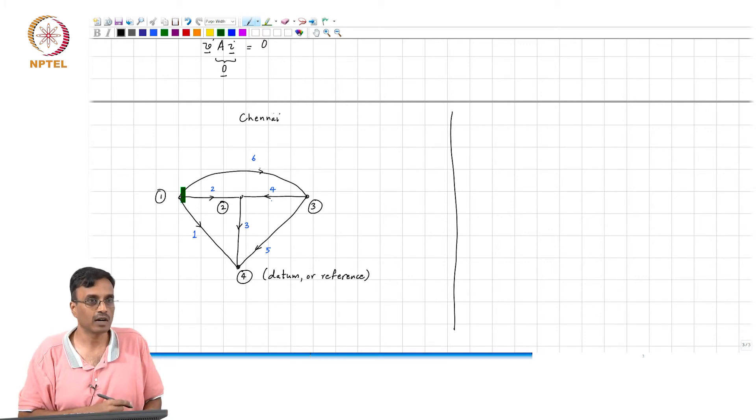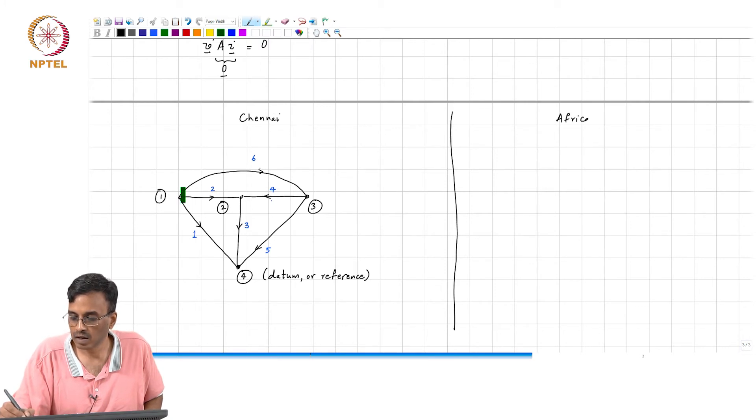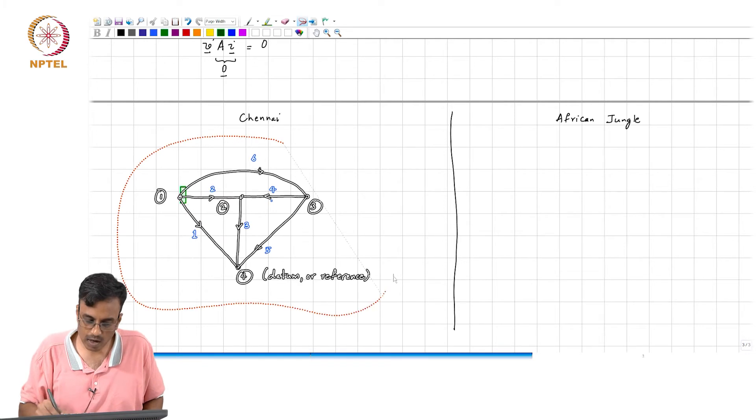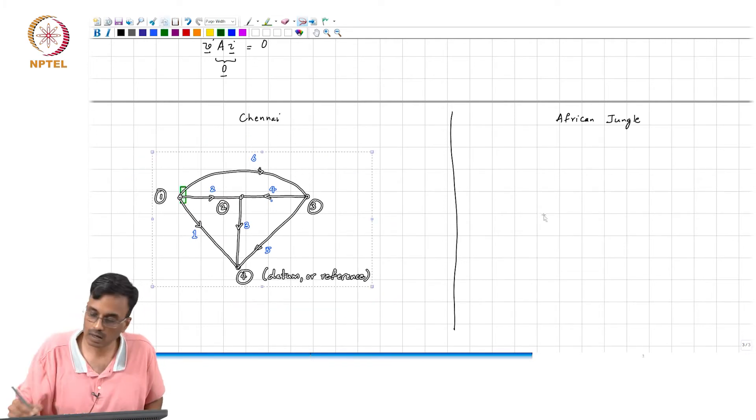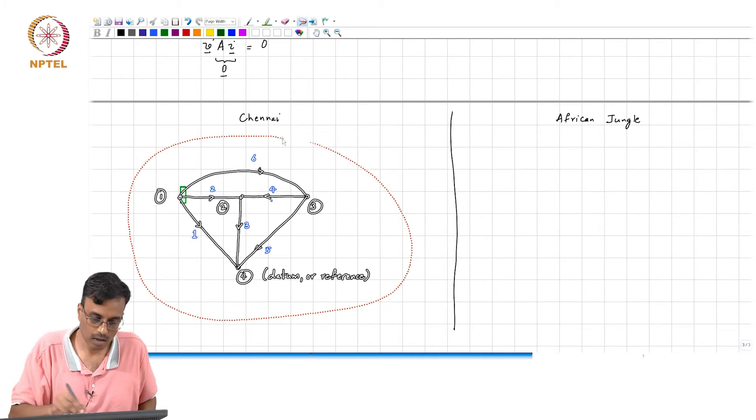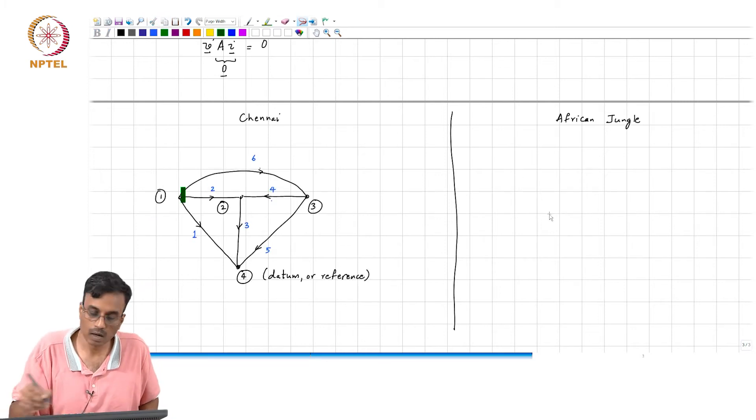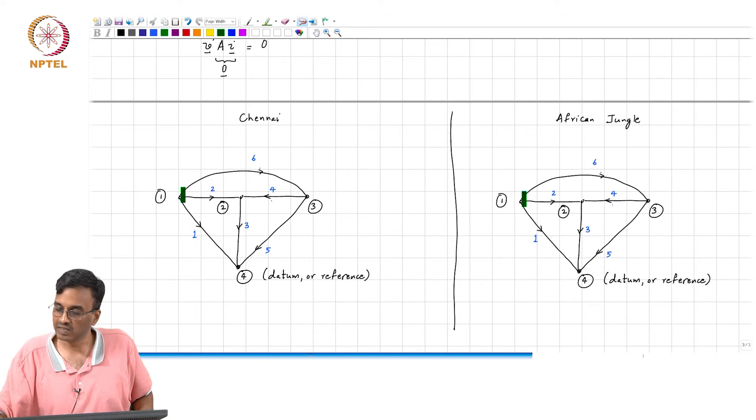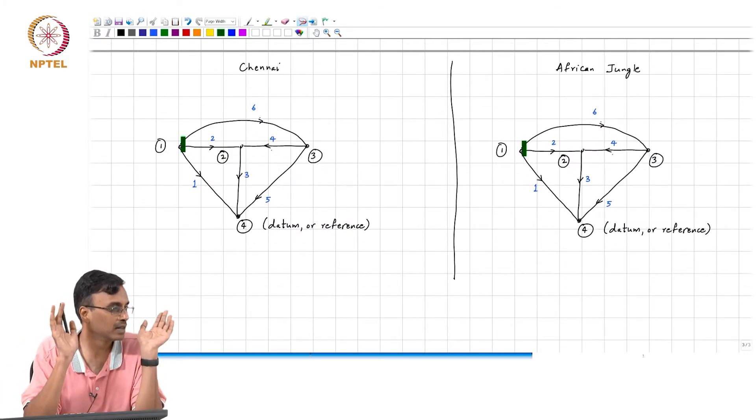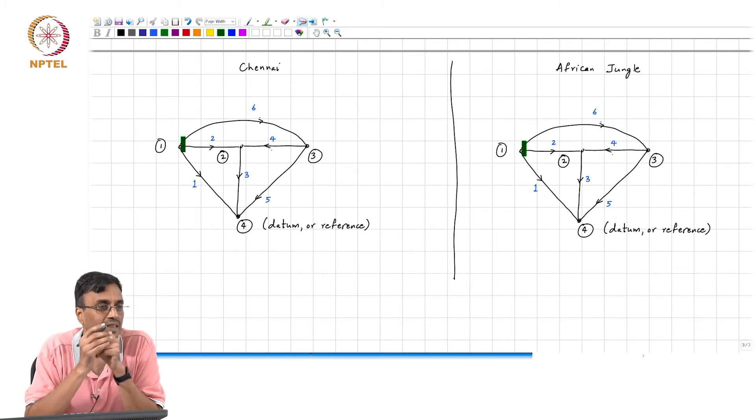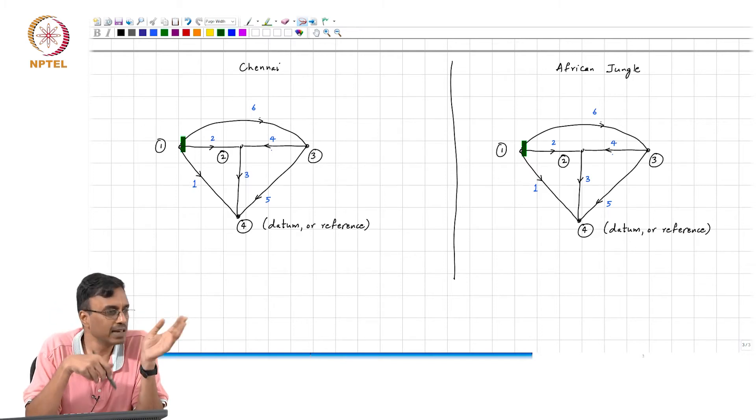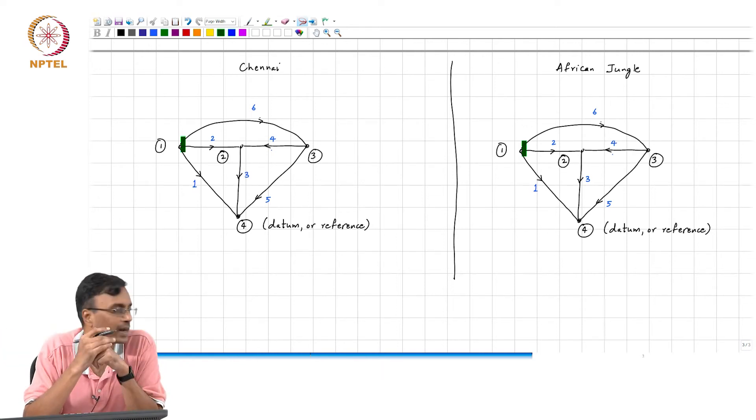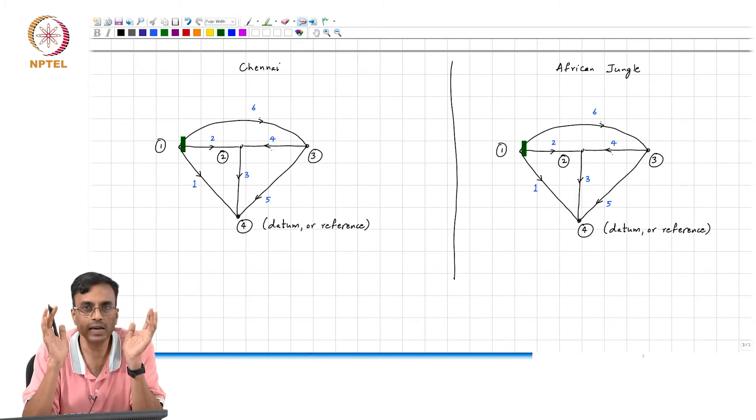And somewhere deep in the jungles of Africa, you have somebody who is totally unknown to you, set up another network with exactly the same graph. The only commonality between both these networks is that their skeletons are the same. One could be linear, one could be non-linear, one could be time invariant, the other could be time variant. It does not matter. All that we say is that these 2 networks are topologically identical.